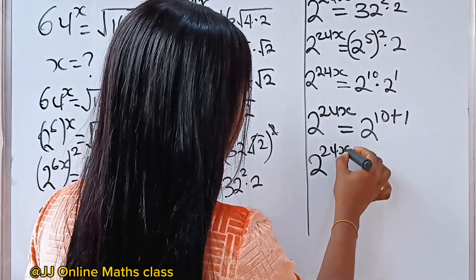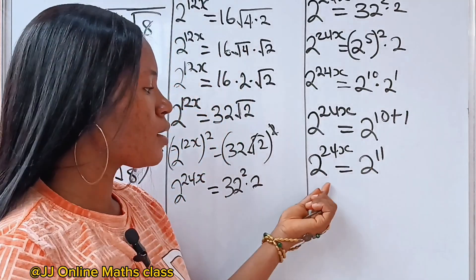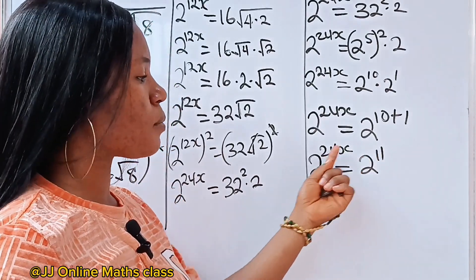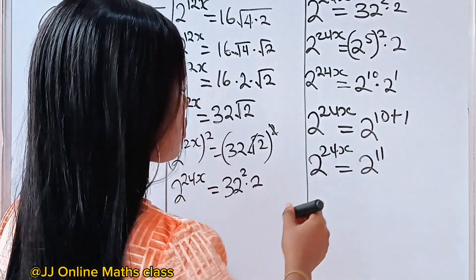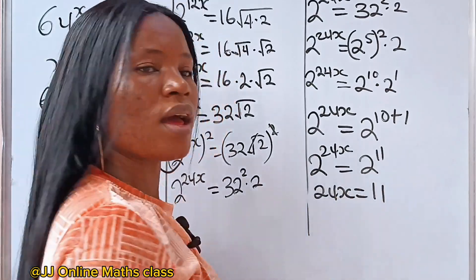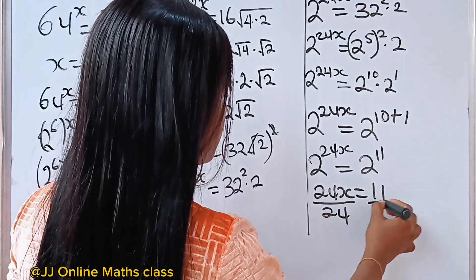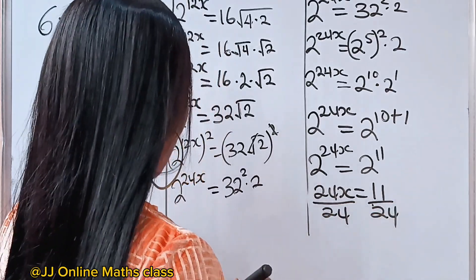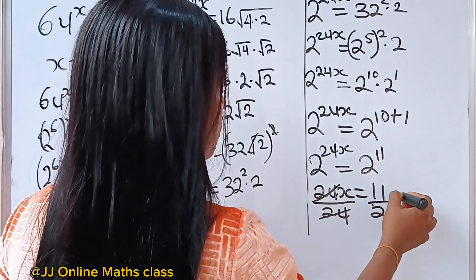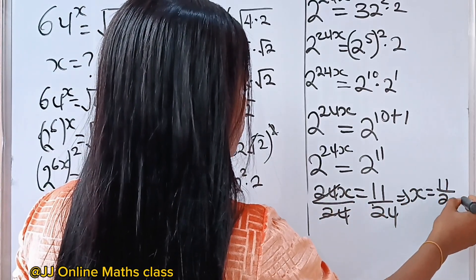So we now have 2 to the power of 24x is equal to 2 to the power of 10 plus 1, which is 11. Same base — the powers are equal. So we write 24x is equal to 11. We divide both sides by 24, and x is equal to 11 over 24.